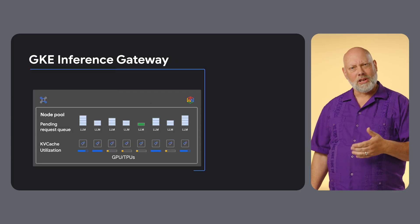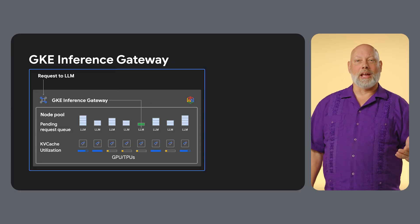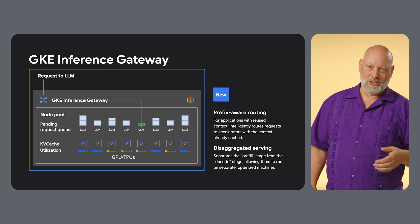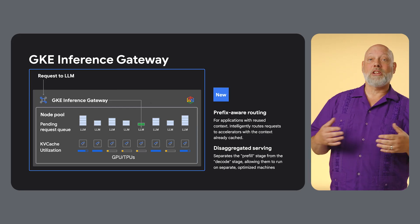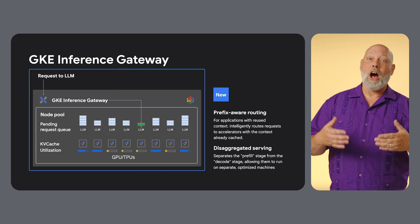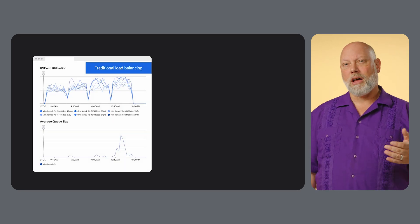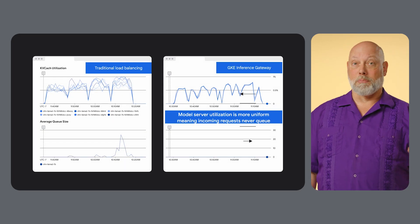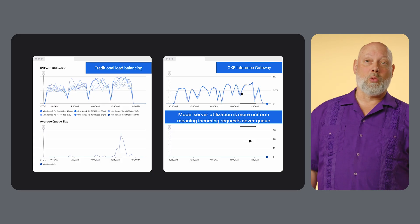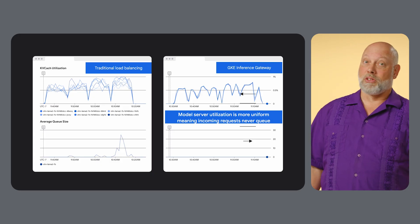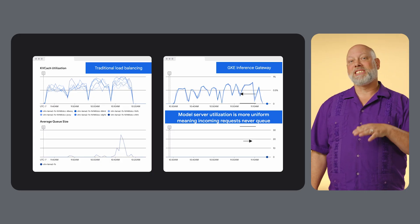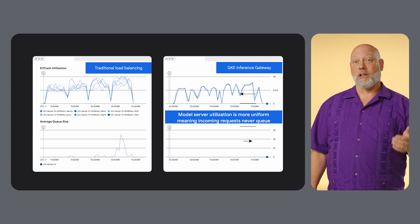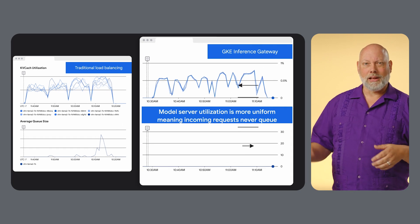At the heart of this architecture is the GKE Inference Gateway. This isn't your standard load balancer — the Inference Gateway is model-aware, meaning it understands the specific needs of your AI models. It can perform intelligent routing based on the model being requested, the priority of the request, and even the request queue on the model servers. This ensures optimal performance and prevents a single long-running request from blocking others.